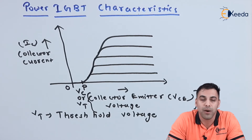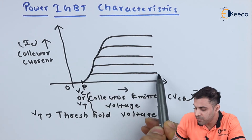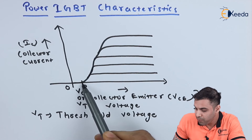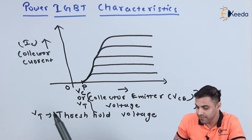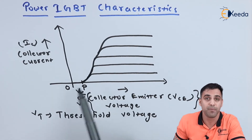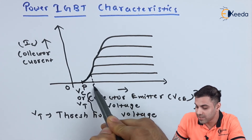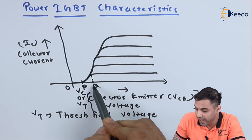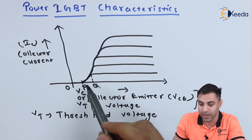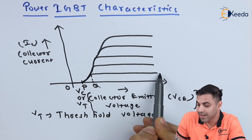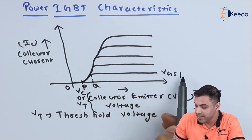If we look at the first part of the curve after point P, the collector current slightly starts increasing when the power IGBT is in the on state. For a specific value of the collector-emitter voltage, let this point be Q. At point Q, where the collector-emitter voltage exceeds the threshold voltage and reaches a certain value, the device is completely on and the collector current becomes constant.